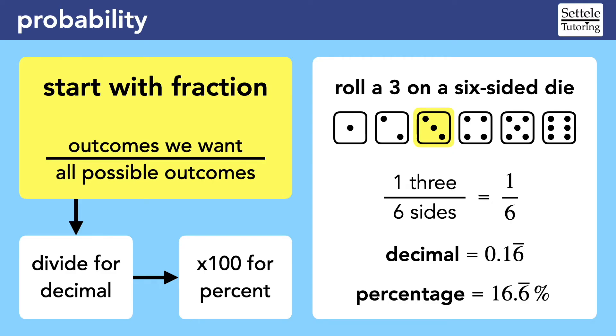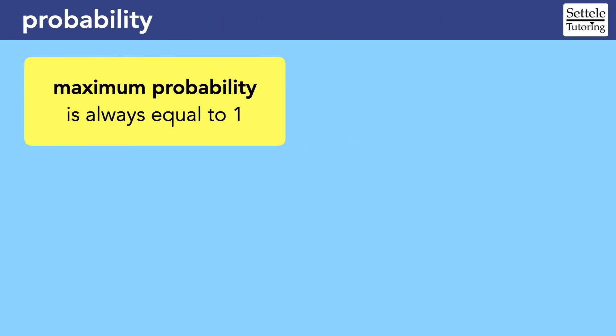In other cases, you might be asked to simplify a fraction. But regardless, if you start with a simple fraction of the outcomes that you want over all possible outcomes, you will always get a version of the probability that you can use to solve that question.